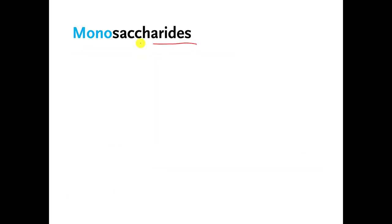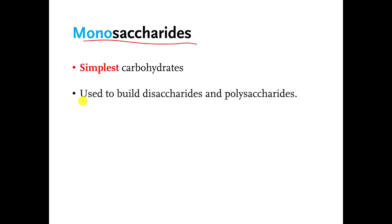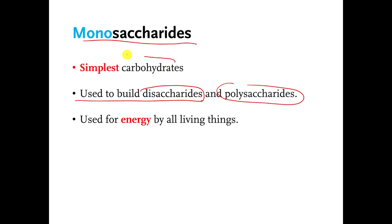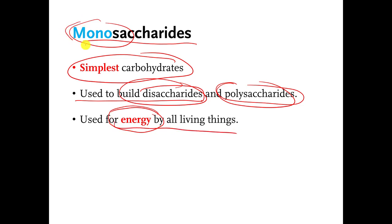The first one I'm going to talk about is monosaccharides. They are the simplest carbohydrates. They are used to build disaccharides and polysaccharides. We can get energy from them. If we're not using them to build bigger carbohydrates, we can take monosaccharides and break them into smaller pieces, and when we break them into smaller pieces, we get energy from them. So you can think of monosaccharides as sugars. We can break sugar molecules apart into smaller and smaller pieces, and that's how we get energy from sugar.